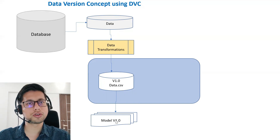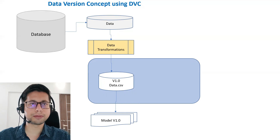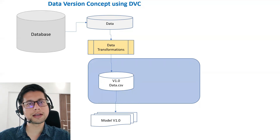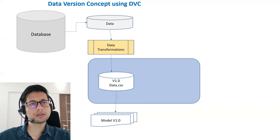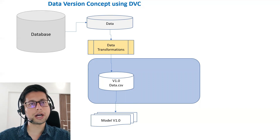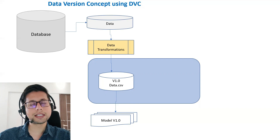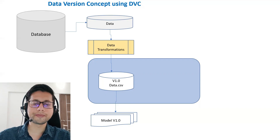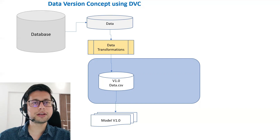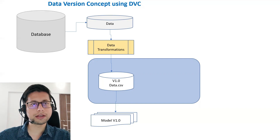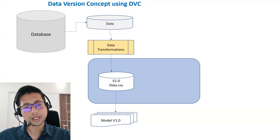Normally, what you do next is check the model performance — how model version 1.0 is performing. Suppose you are not happy with the model performance. As a next step you will start doing some fine tuning. In fine tuning, you change certain hyperparameters or apply more transformations on the data, and that's where you get a newer version of data as well as newer experiments.